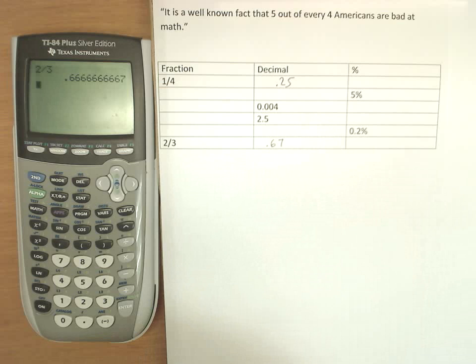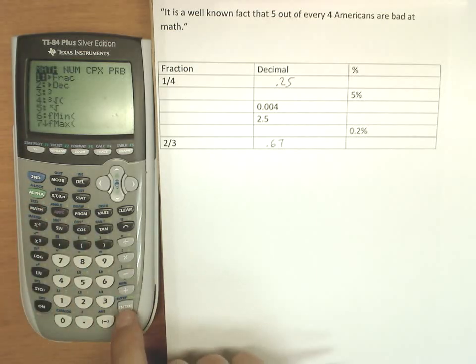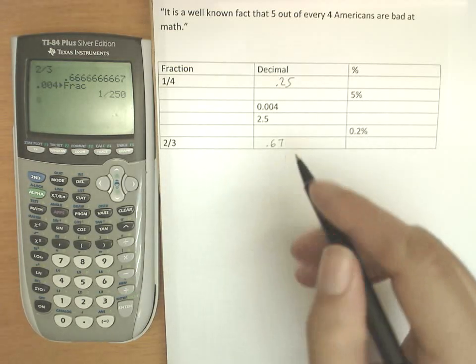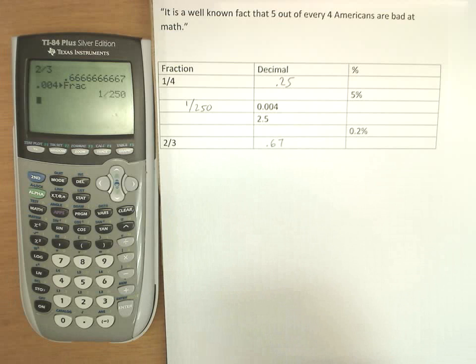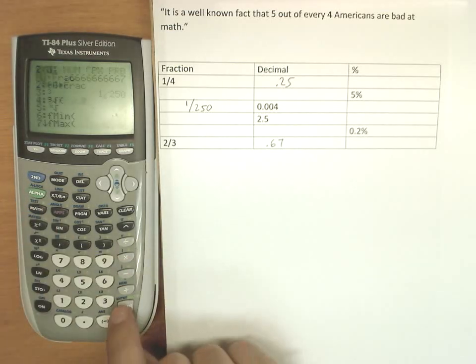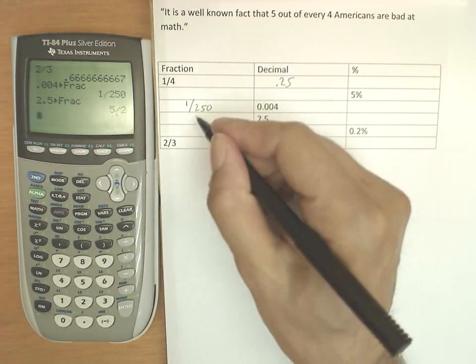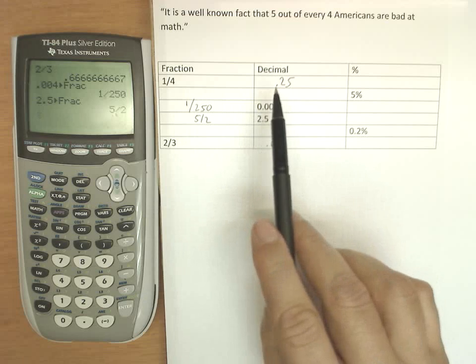I'm going to show how we can do this on the calculator. Type in 0.004, and I press math. The first choice is answer to fraction, and it will turn into a fraction and properly reduces to 1 over 250. Well, I'm going to want to see what it does with 2.5. 5 halves. So that's how we can turn fractions to decimals, decimals to fractions.